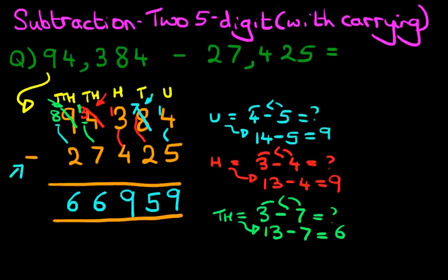And we have our answer: 66,959. This is correct. So that is how we do subtraction of two five-digit numbers with carrying using the vertical format.